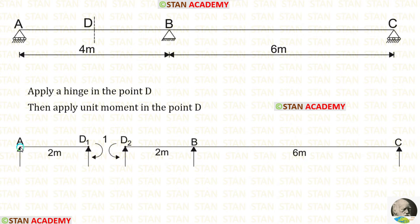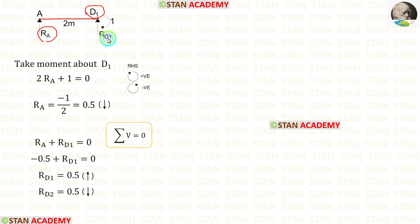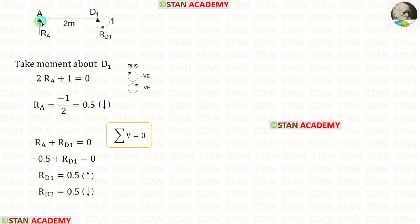Now let us take AD1 and find out the vertical reactions. In AD1, I am going to calculate RA by taking moment about D1. I am moving towards the right hand side, so clockwise will be positive and anticlockwise will be negative. RA is acting towards point D1 in the clockwise direction, so it will be positive and the distance is 2, giving 2RA. Then we have the unit moment acting in the clockwise direction, so it will also be positive.